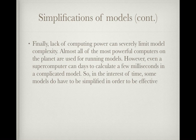The lack of computing power can severely limit model complexity. Almost all of the most powerful computers on the planet are used in models. However, even on a supercomputer, it can take days to calculate even just a few simulated time-steps in a complicated climate model. So in the interest of time, some models have to be simplified in order to be useful. The example used in the book is that if it takes a whole day to calculate what the temperature is going to be the next day, you might as well just wait and find out. The point is that some scenarios are time-specific and it's not worth it if you can't calculate it accurately within time.